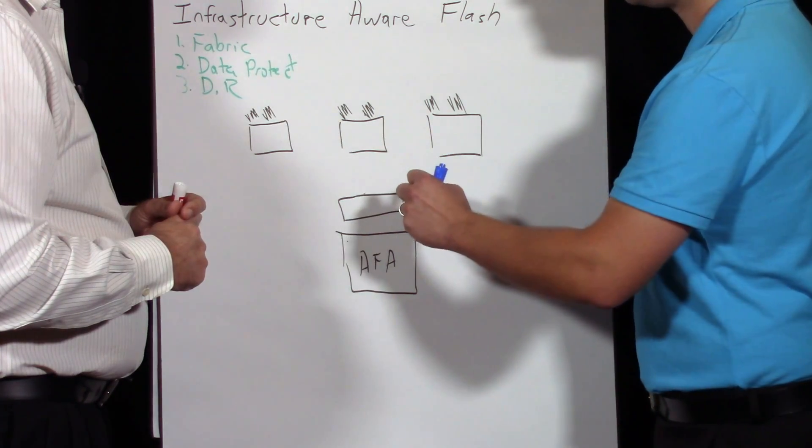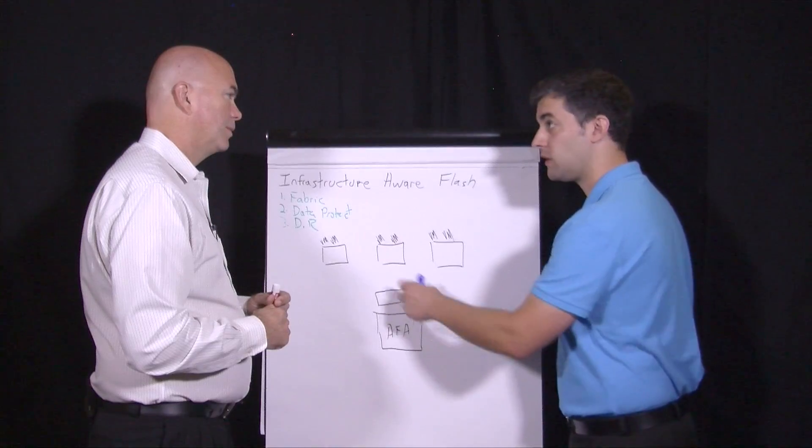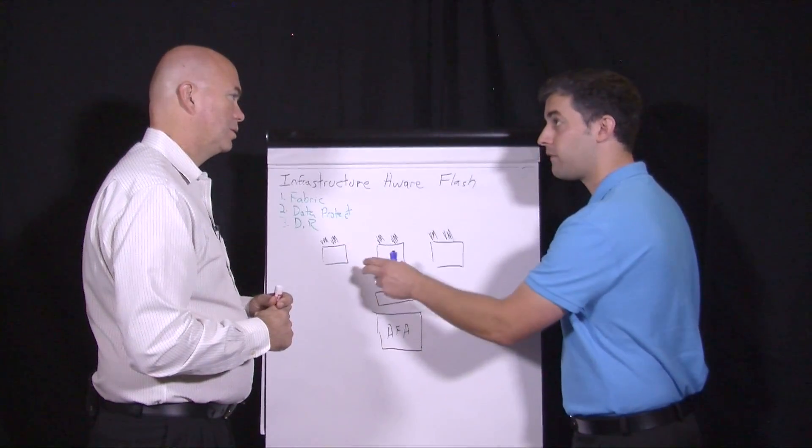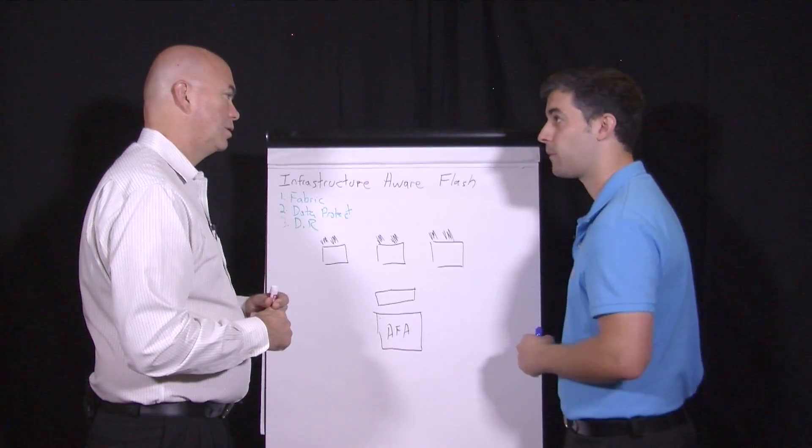What it allows us to do is from the array we can actually see the entire fabric and all the hosts. If you have a new host added to the environment, we can see it attempting to log into the switch, and we can start adding that host profile to the switch and provisioning storage without having to break out into the actual fabric management.